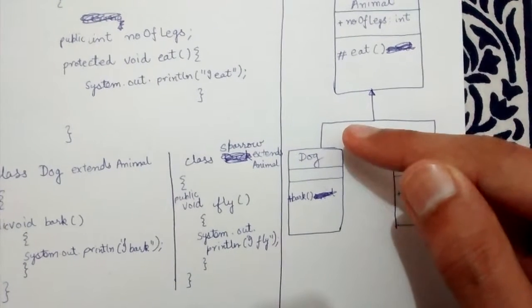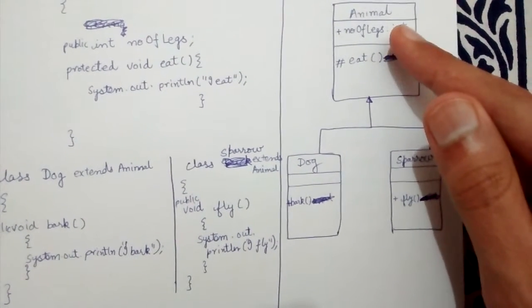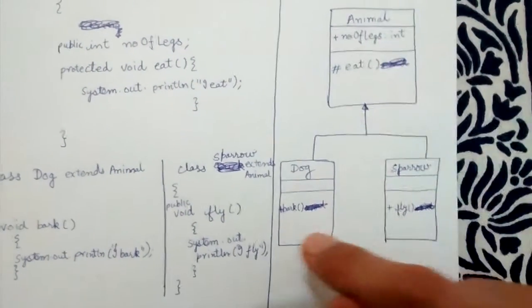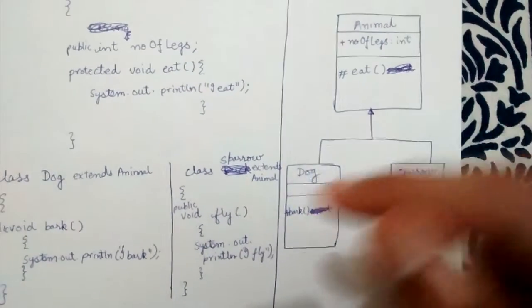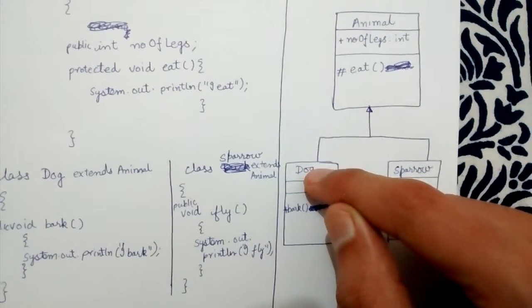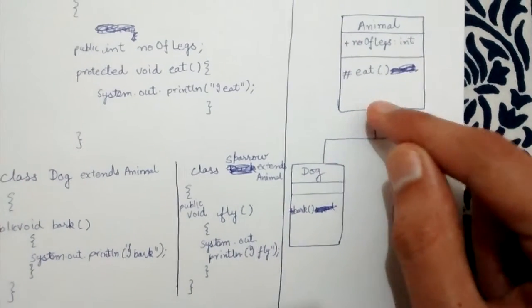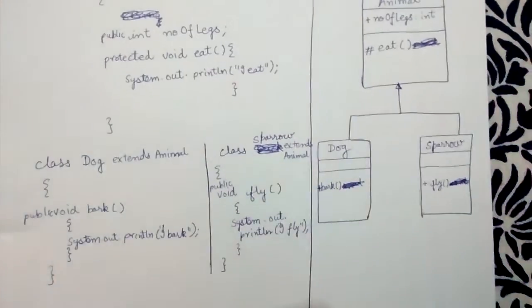The direction of the arrow is towards the superclass. Animal is the superclass here, and these are its subclasses. The arrow starts from Dog and points towards Animal - this is an important point to note. Thank you, friends.